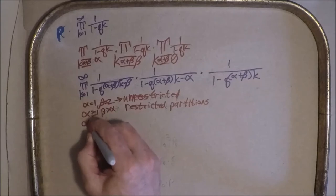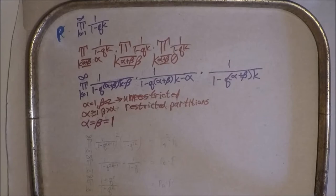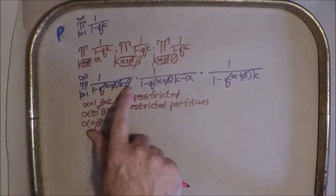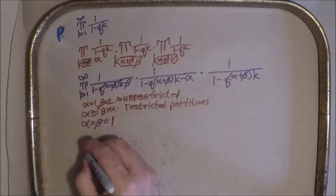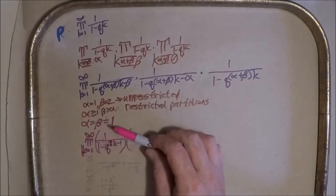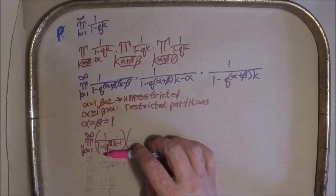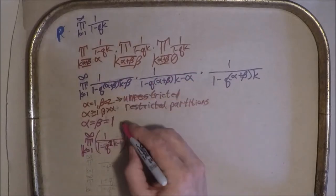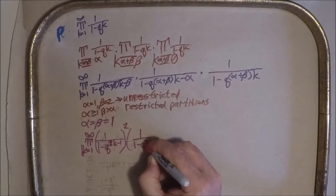So alpha equals beta equals one, which all we have to do is that becomes two K minus one, two K minus one and two K. So K equals one to infinity of one over one minus Q to the two K minus one squared times one over one minus Q to the two K.